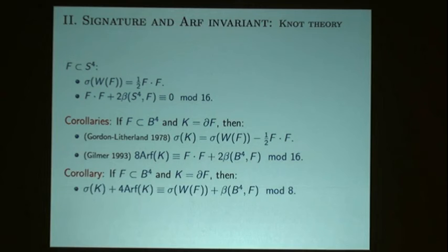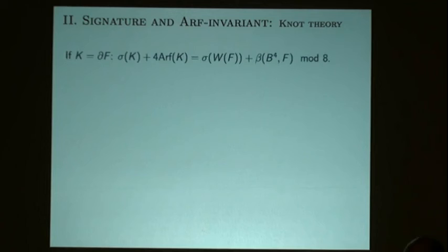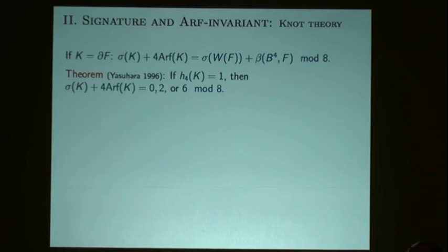The corollary, doing some algebra with these two equations: if you bound a surface F in the four-ball, the signature plus four times the Arf invariant is given by the signature of the four-manifold plus the Brown invariant of that surface.